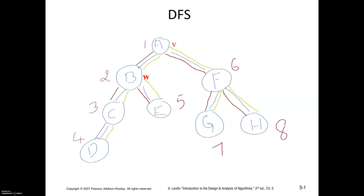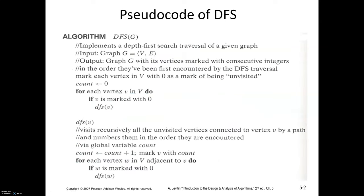In depth first search, the idea is: start with vertex A, then visit adjacent to A, then adjacent to adjacent to A, and so on. So start with A, then B, then C, then D — at that point you have reached a dead end. Now backtrack to C, then B, then visit E. Backtrack to A, then visit F, then G, then finally H. The numbers written indicate the order in which the vertices are visited: A, B, C, D, E, F, G, H. Now we'll see the pseudocode for DFS.